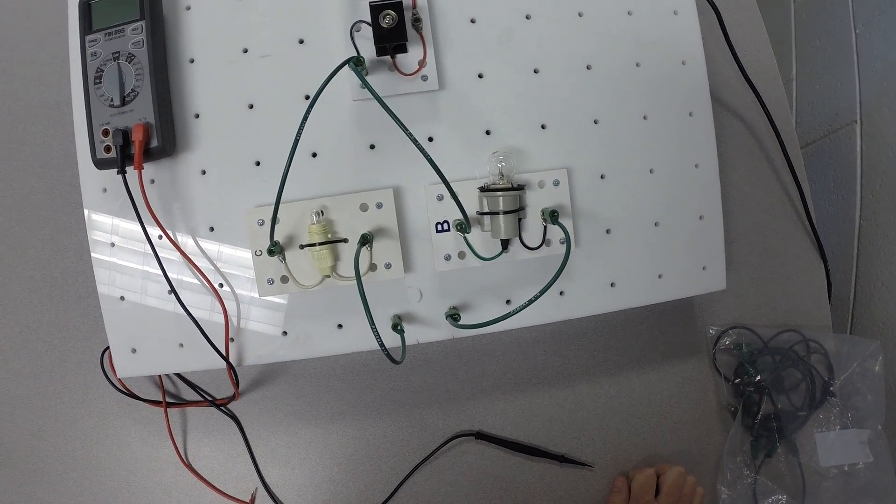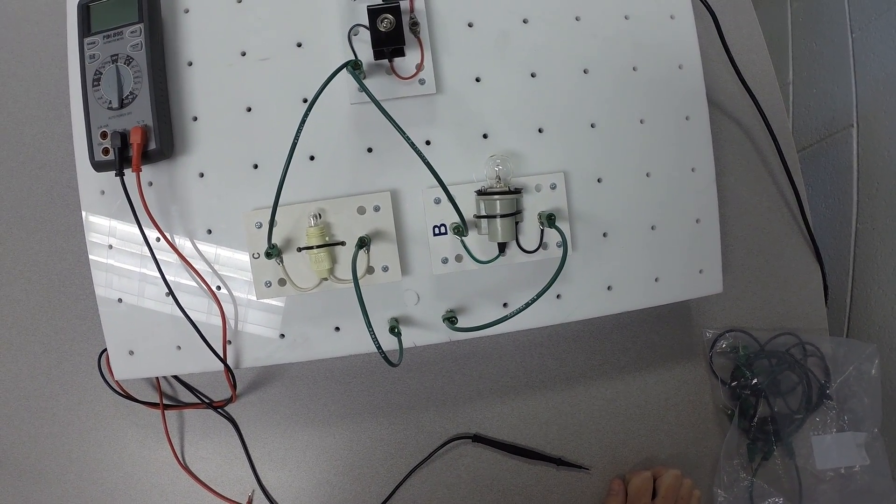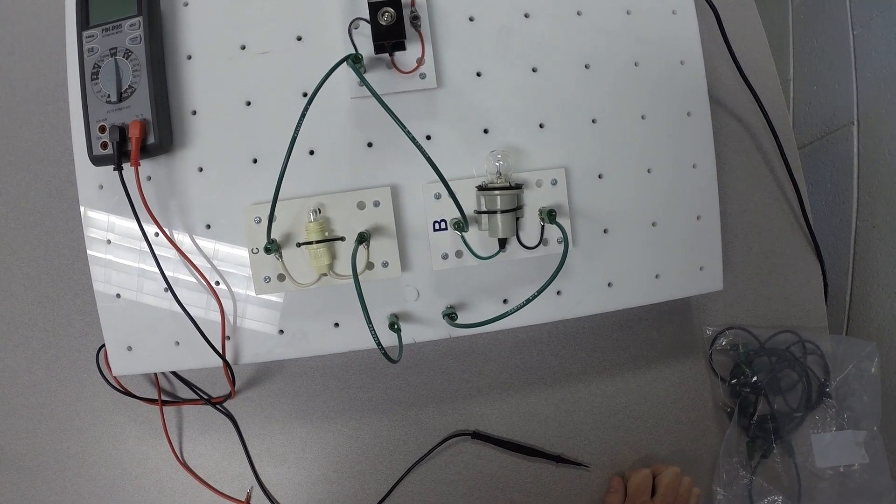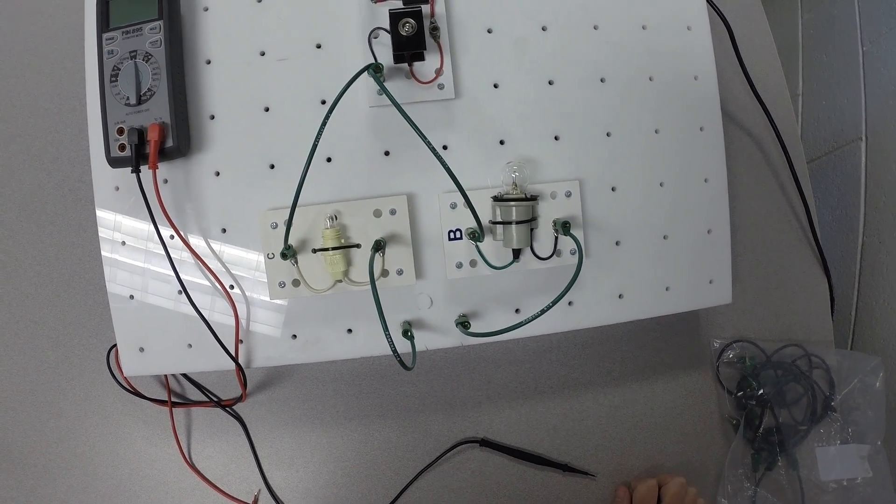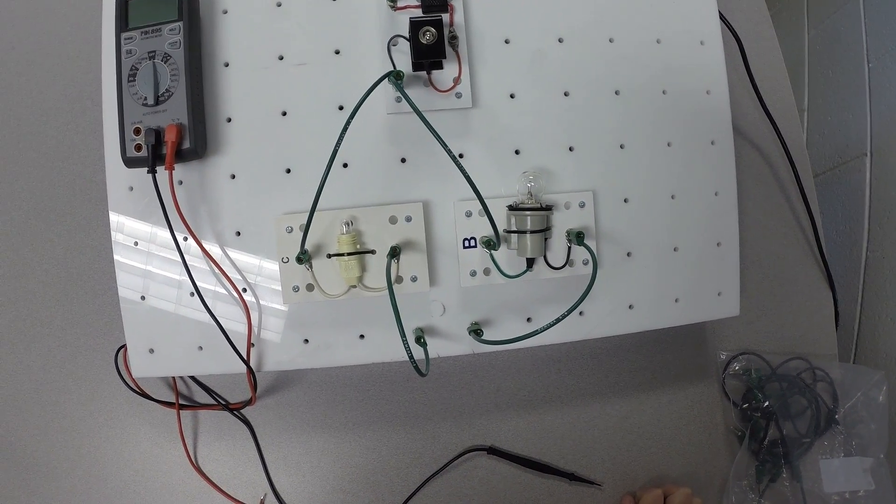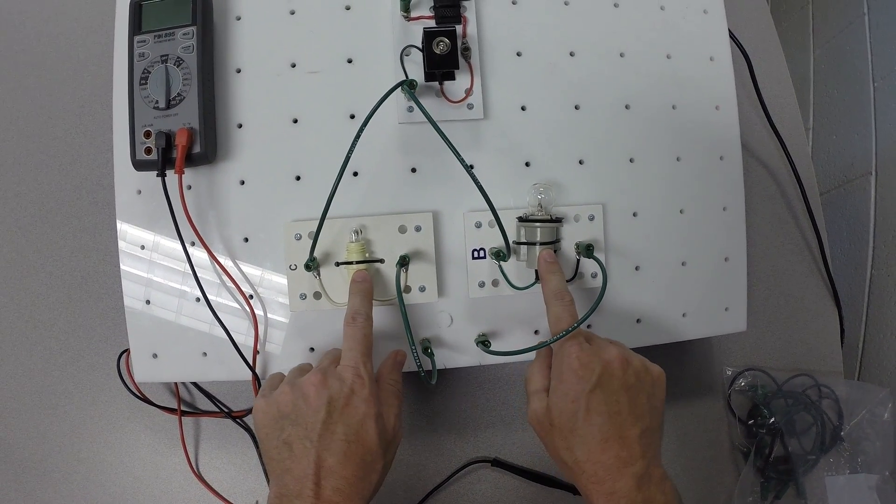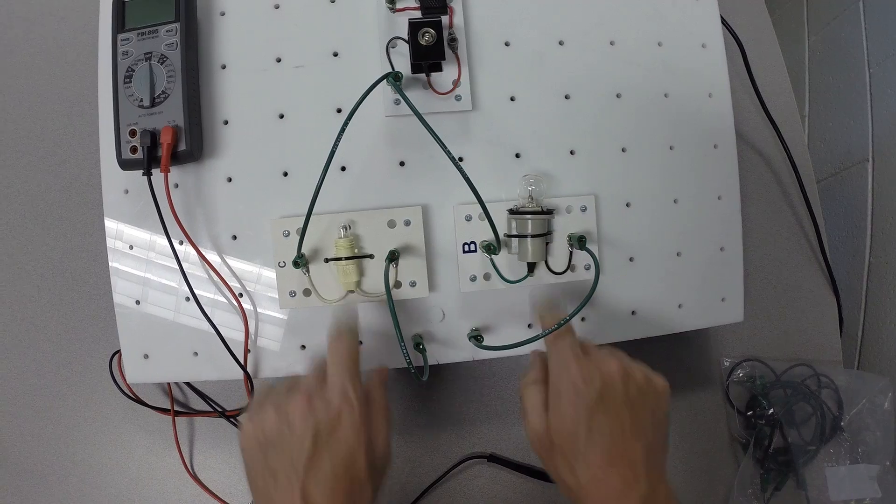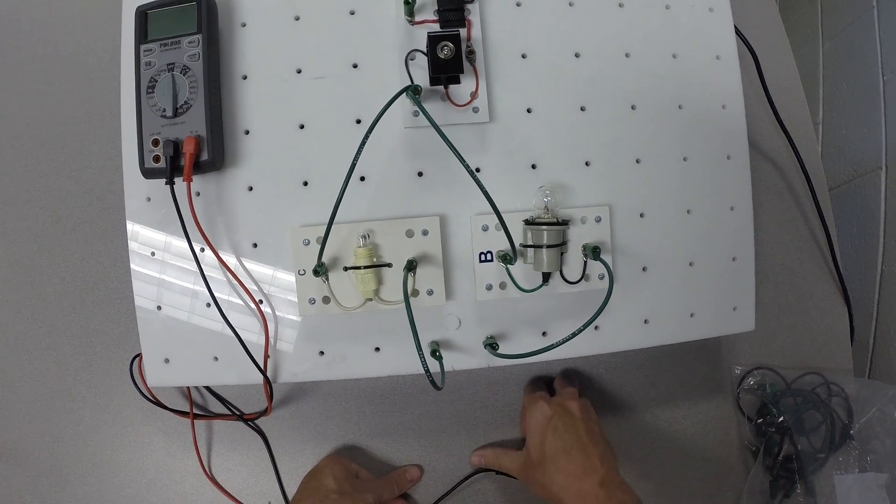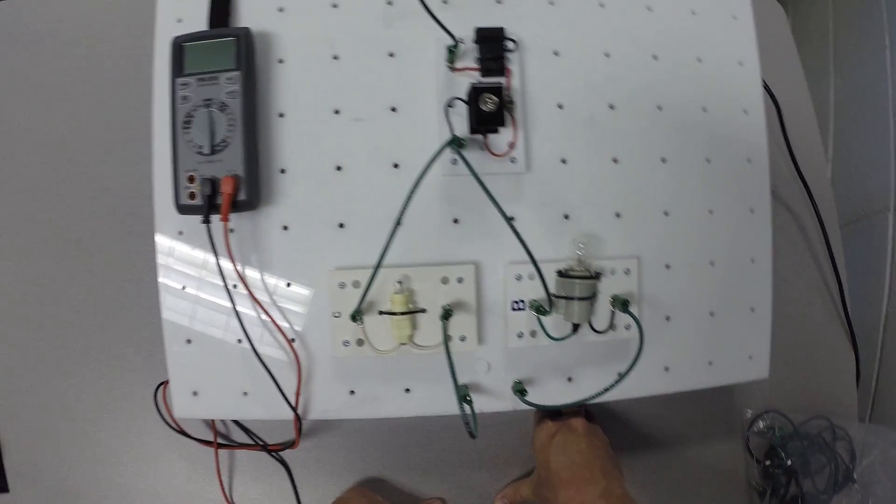With a series circuit, we can measure the current anywhere in the circuit, and it will be the same. But in a parallel circuit, the total current is going to be equal to the sum of each individual leg, or each individual branch of the circuit. So let's measure it and see what it looks like.